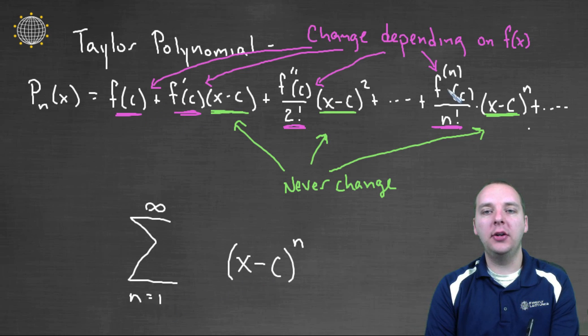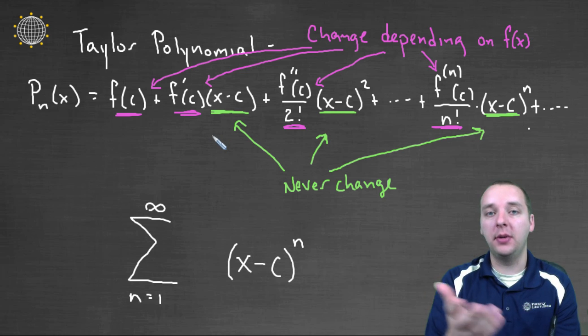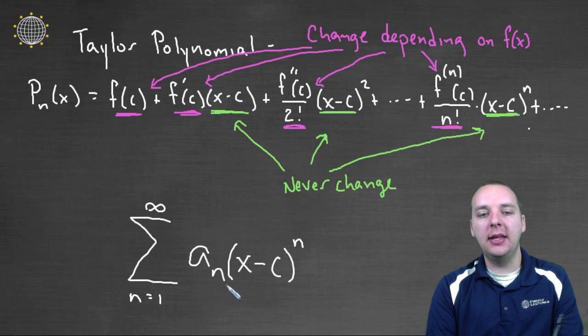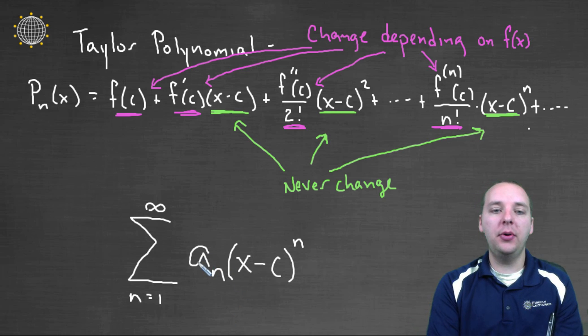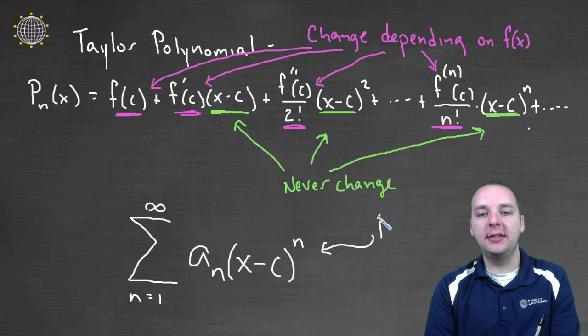Now, what do we do about these things that are changing? Well, they're going to change depending on your function, and the actual term will depend on which term you're at. If you're at the second term, it'll be one number. If you're at the fifth term, it might be a different number. So I'm going to just absorb all those together, and just call it just a generic a sub n. And that's just a number that depends on n, the number that depends on the term that you're at. And so we can equate these two guys together here. And this is what's known as a power series.